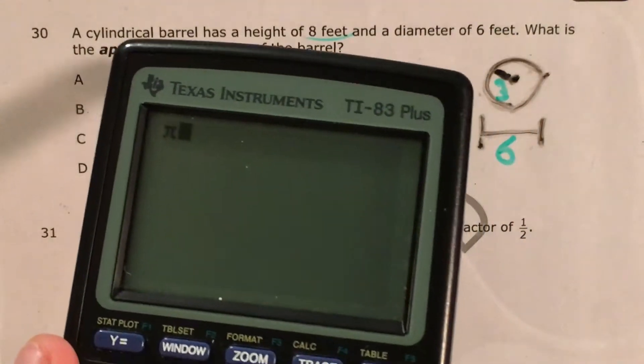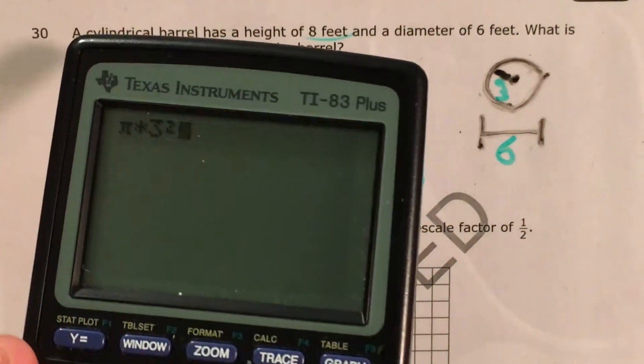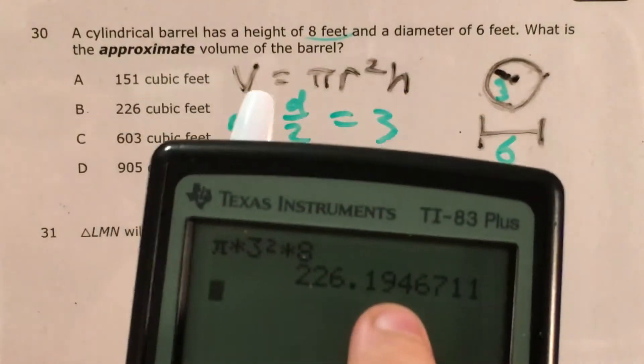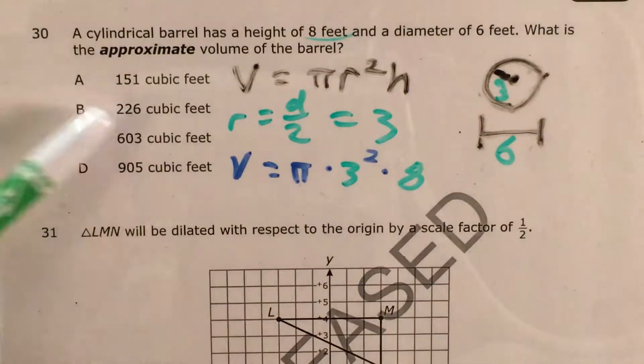So that's pi times radius squared times height: pi times 3 squared times 8. It gives me about 226, which does match one of my answer choices—it matches choice B.